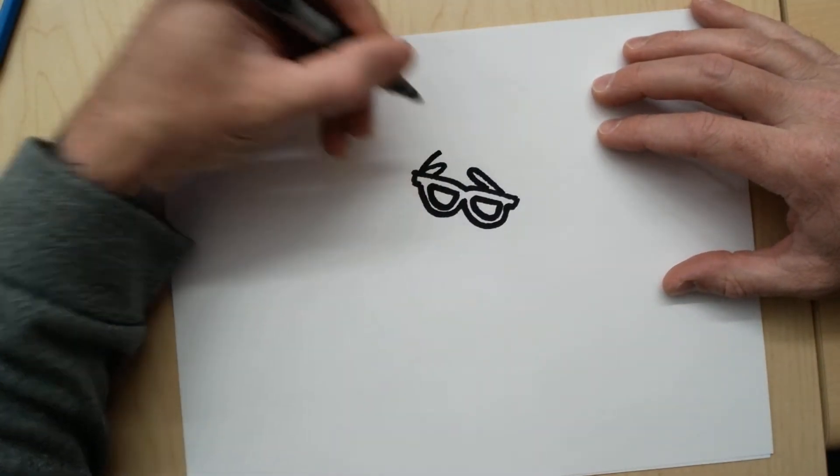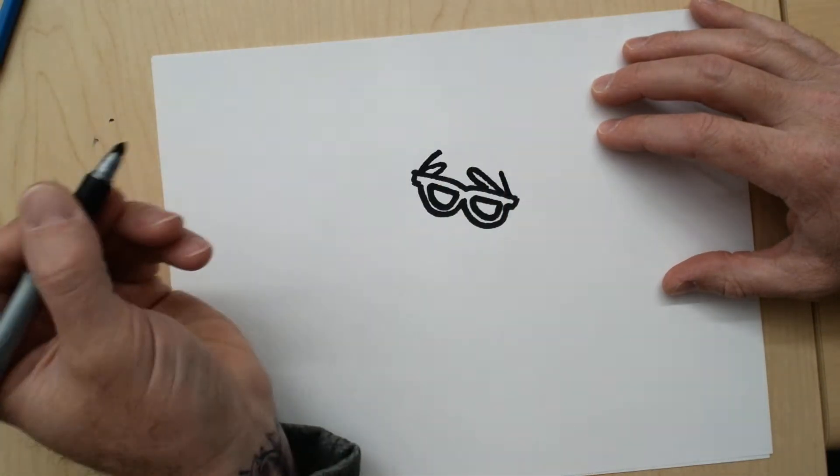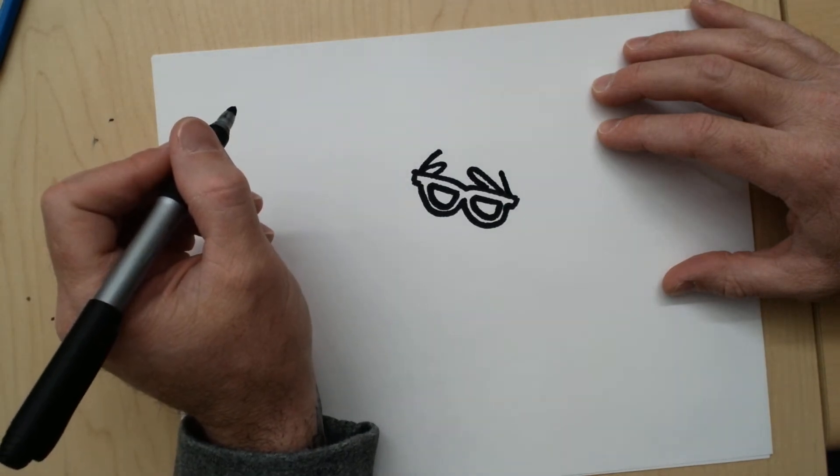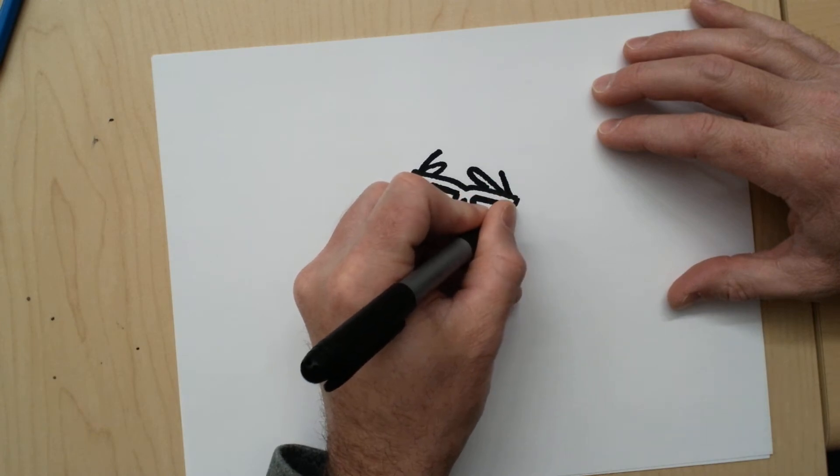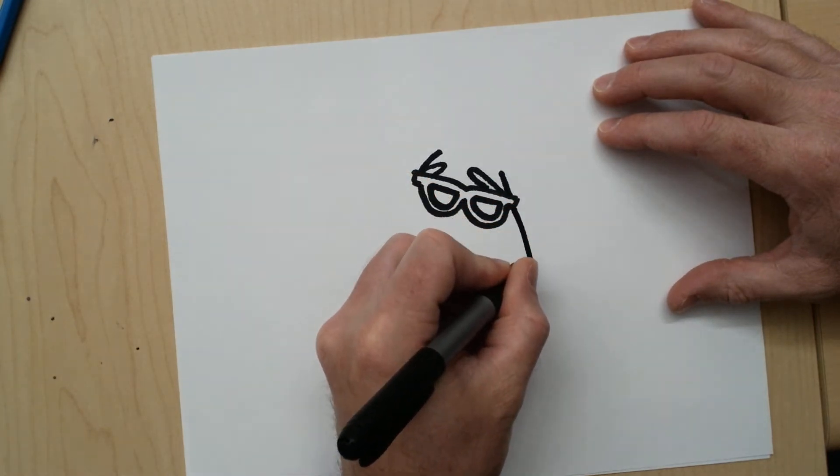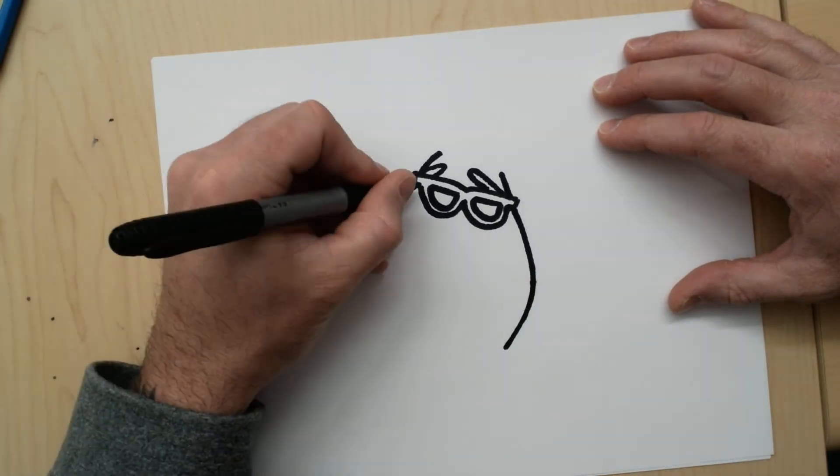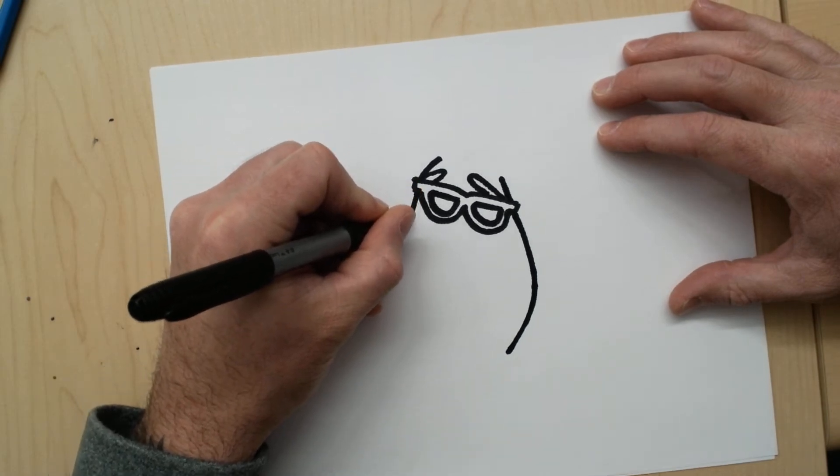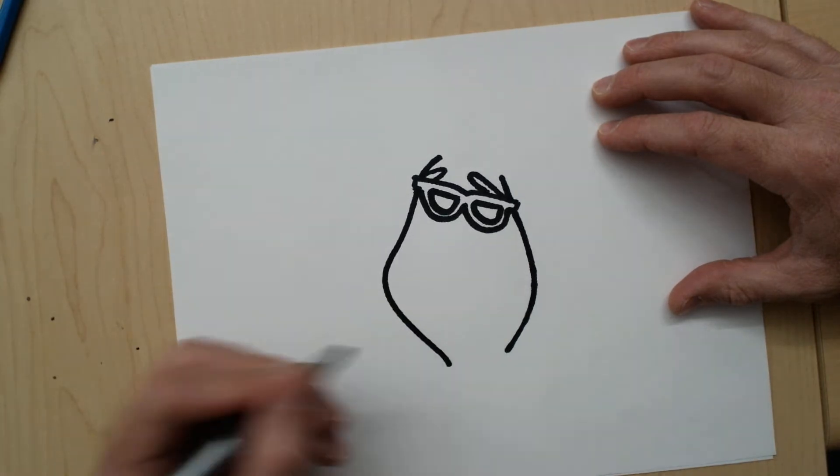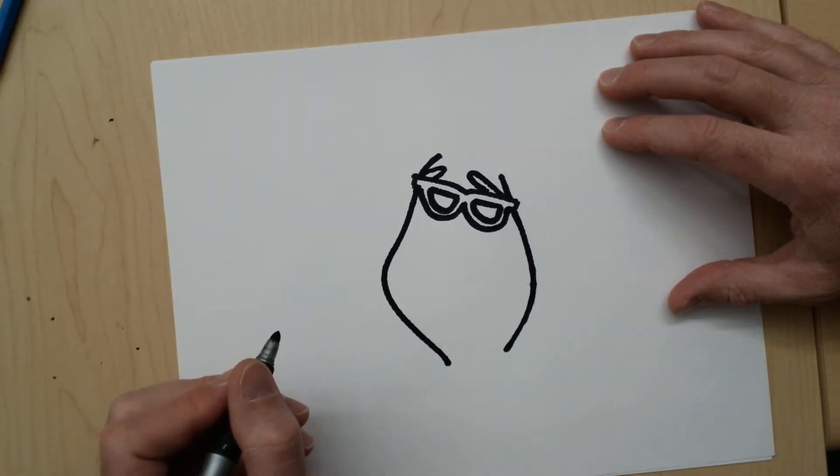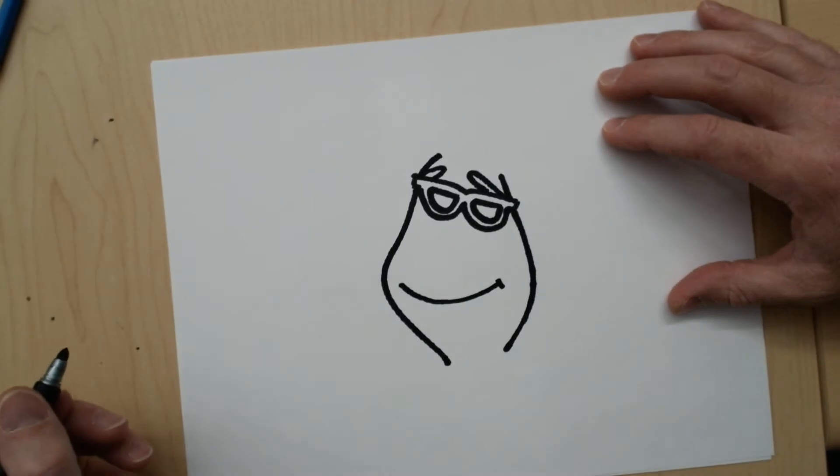Coming out of here we're going to have two lines up and this one's angled up for his head. And now right on the other side of those glasses we're going to come out like this, down and in, and this one's going to come out and in like that. He has a big old smile, like that.